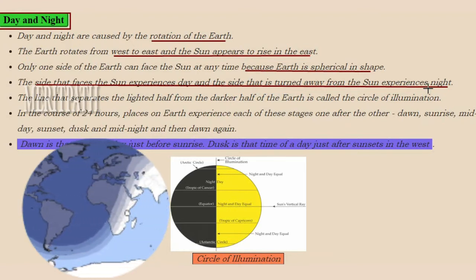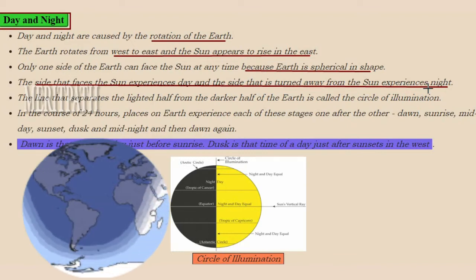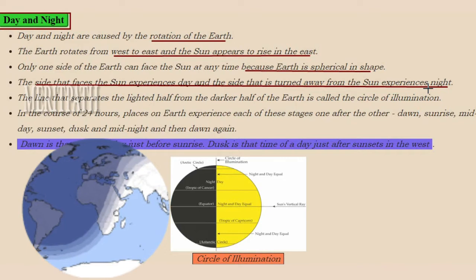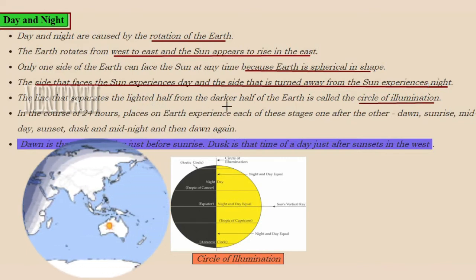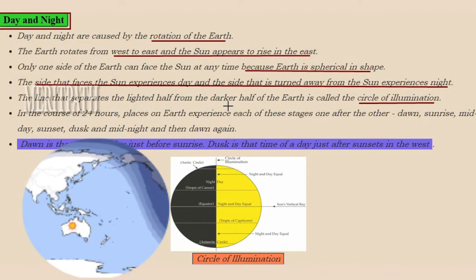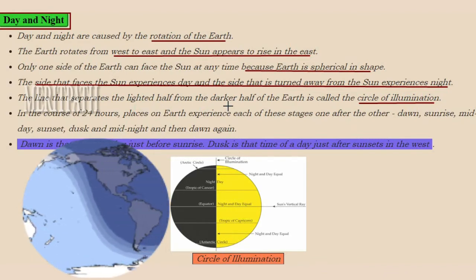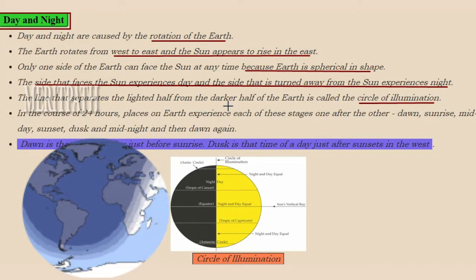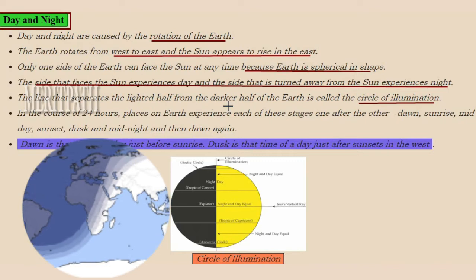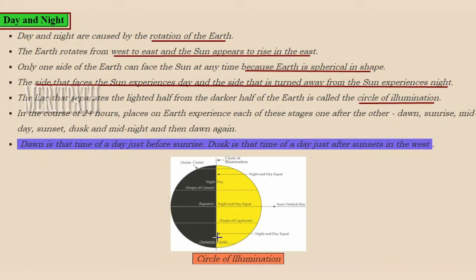That is the reason people living in India will have day while people living in America will have night — because of earth's rotation. There is a line that separates the lighted half from the darker half. One half of the earth has daytime and the other half has night time. The line which separates this lighted and darker part of the earth is known as the circle of illumination.